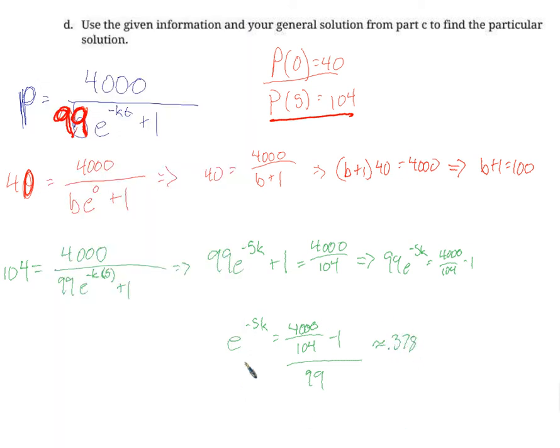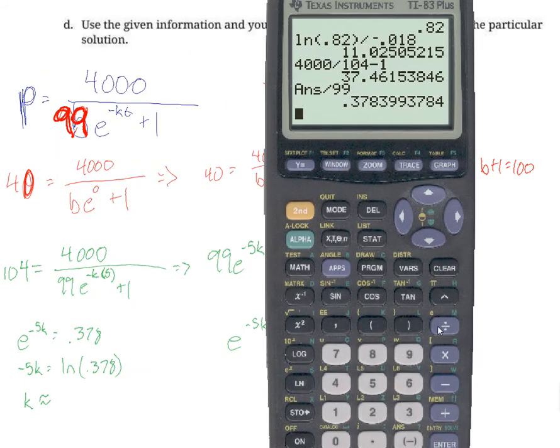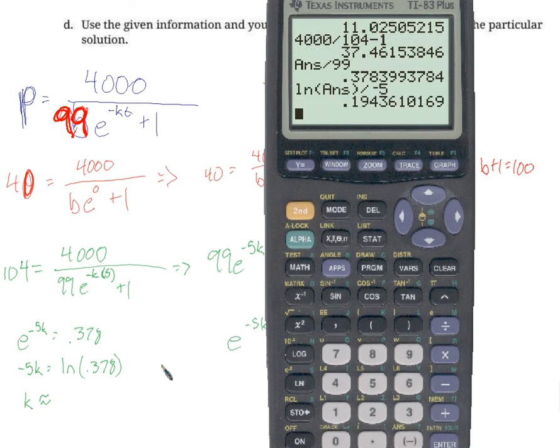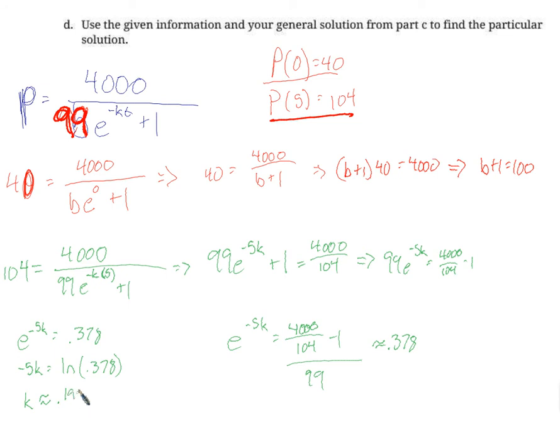E to the negative 5k equals 0.378. Take the natural log of both sides. Negative 5k equals the natural log of 0.378. Divided by negative 5, k is going to be the natural log of this answer divided by negative 5, 0.194. So that's what k is, negative 0.194. There it is, there is the particular solution.